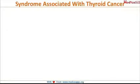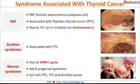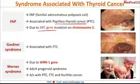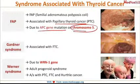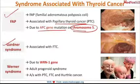After understanding the classification and major updates, we will discuss syndromes associated with thyroid cancer. The first is FAP — Familial Adenomatous Polyposis coli — which is associated with papillary thyroid cancer and occurs due to APC gene mutation on chromosome 5. These syndromes are frequently asked in exams.